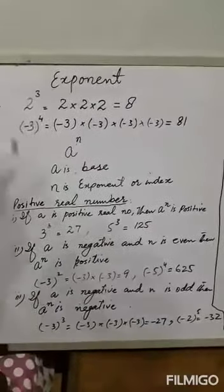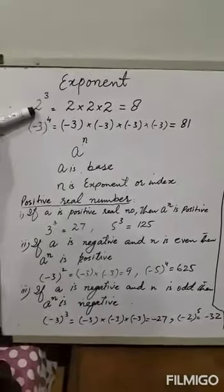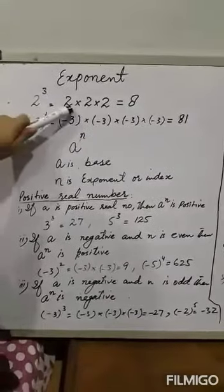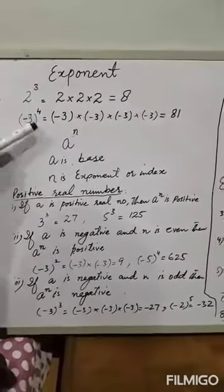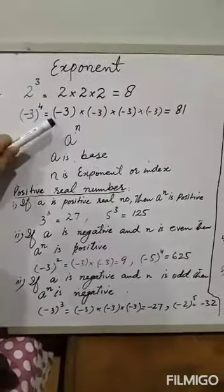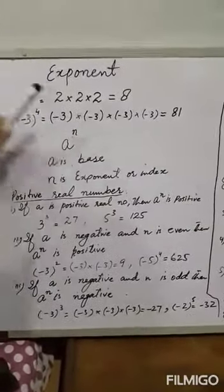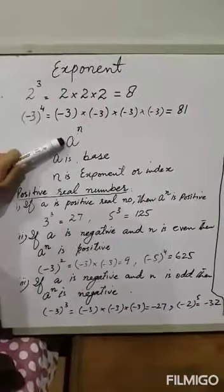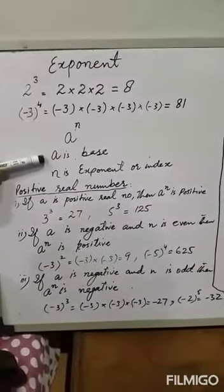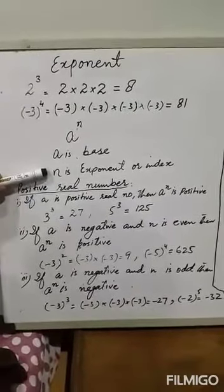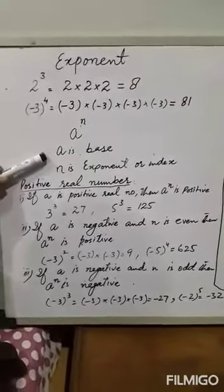Now we move towards exponents and laws of exponents. As you know, 2 raised to the power 3 equals 2 multiplied 3 times and the result is 8. Similarly, minus 3 raised to the power 4 means minus 3 multiplied 4 times and the result is 81. Symbolically, we write A raised to the power N, where A is the base and N is called the exponent or index.